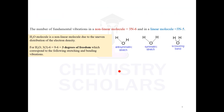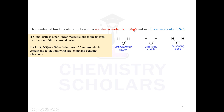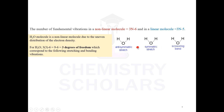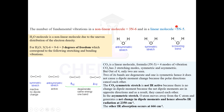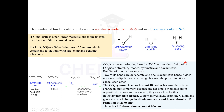Now regarding the number of vibrations: for a linear molecule the formula is 3N − 5, and for a non-linear molecule it is 3N − 6. For example, H₂O is a non-linear molecule — applying the formula gives the answer 3, indicating it has 3 vibrations or 3 degrees of freedom. CO₂ is a linear molecule, so applying the formula gives 4 modes of vibration.